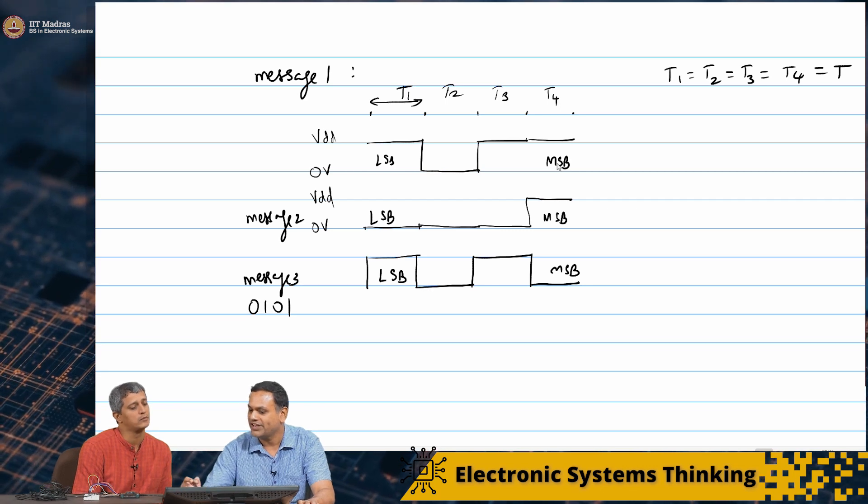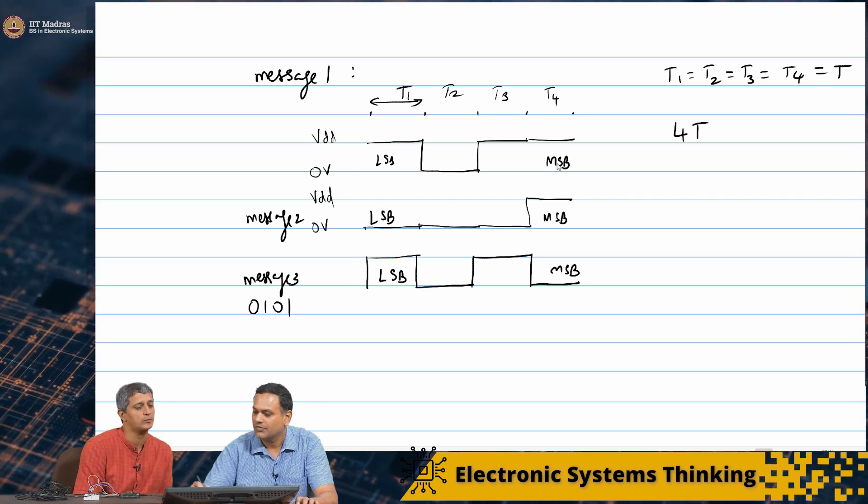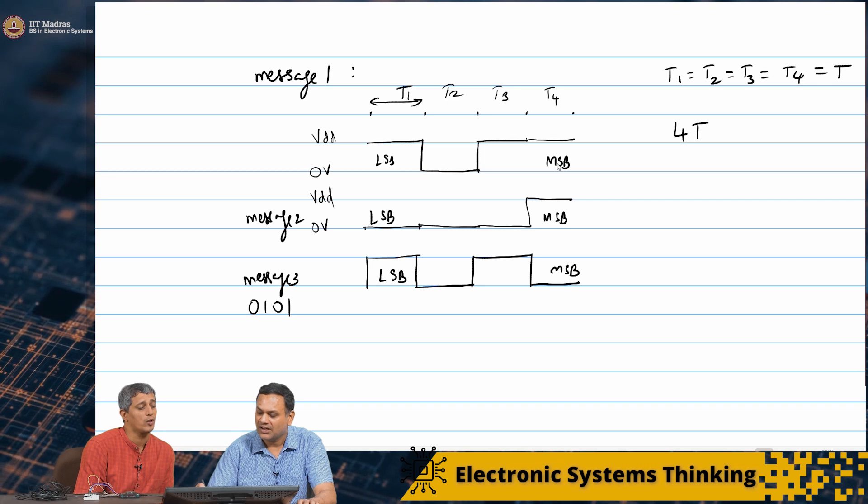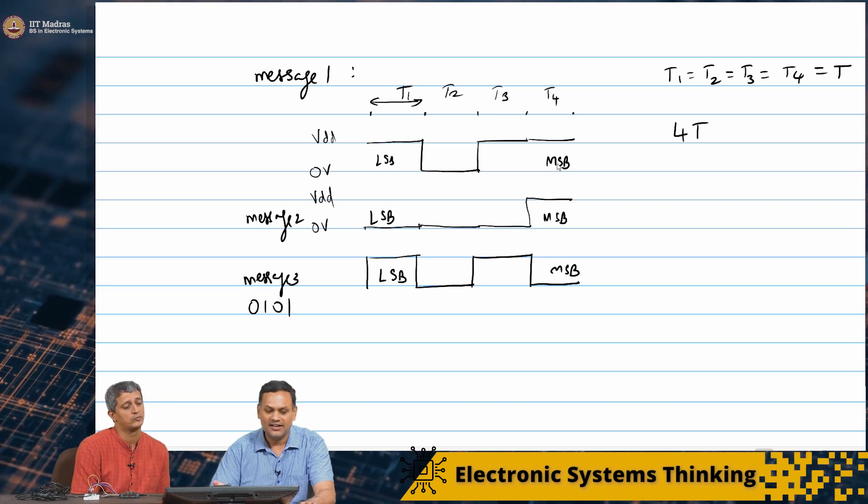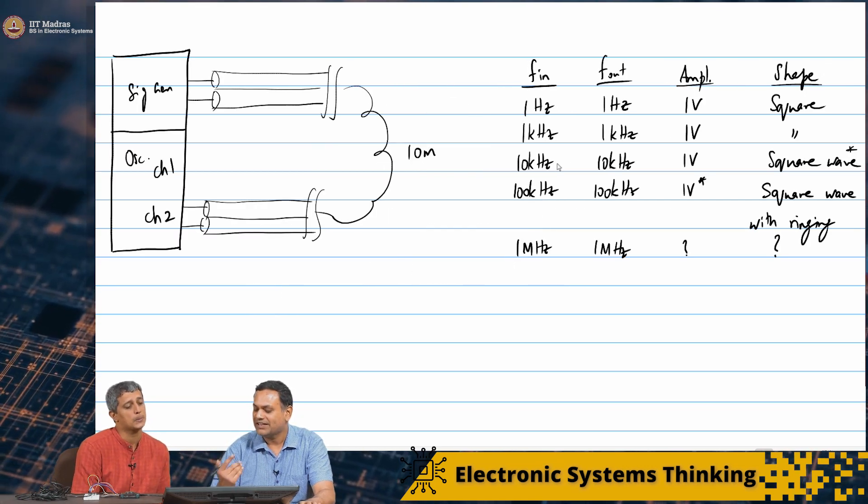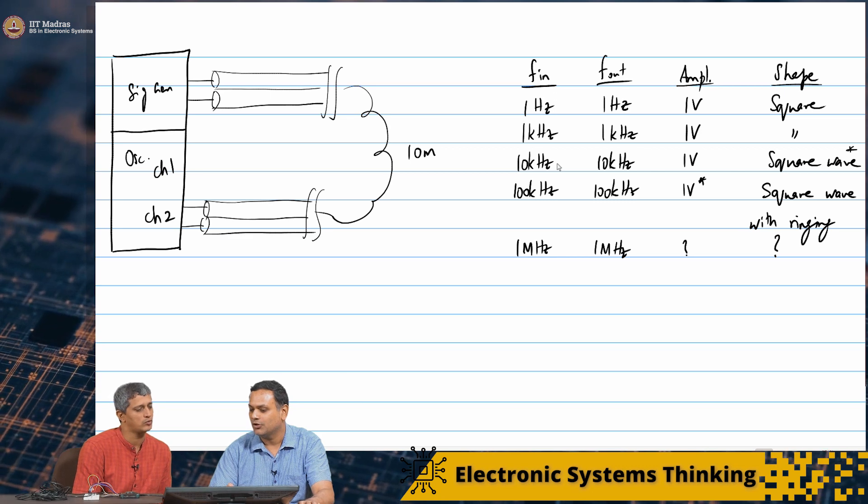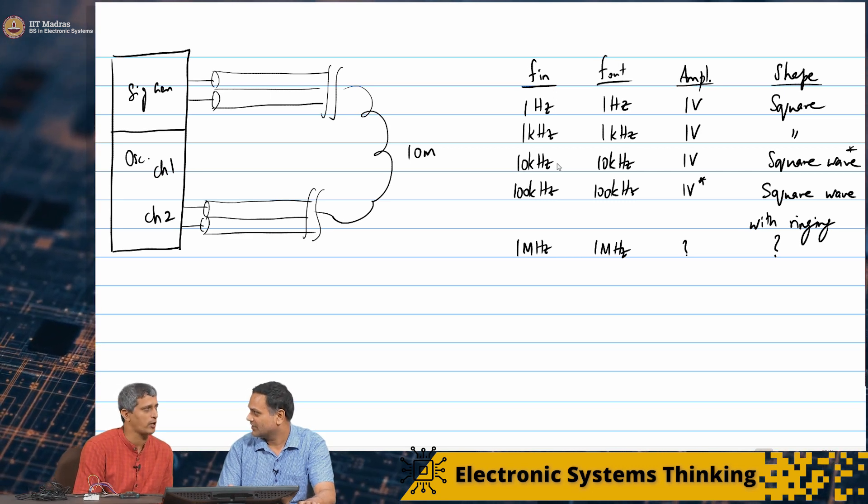It looks like you take 4T. 4T to send one message, which means at 10 kilohertz, the time period was 0.1 milliseconds, 100 microseconds.